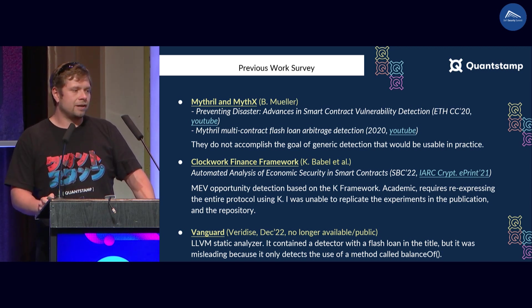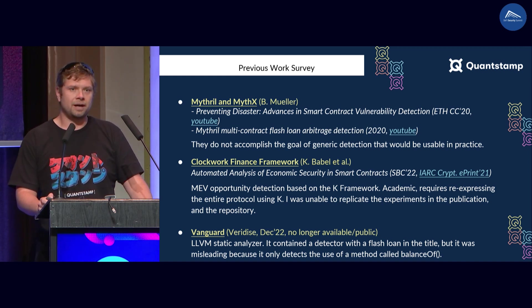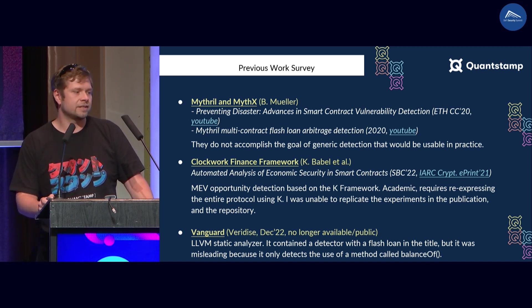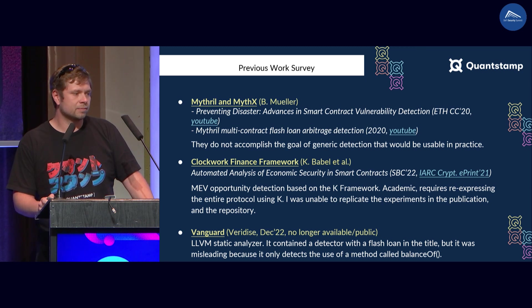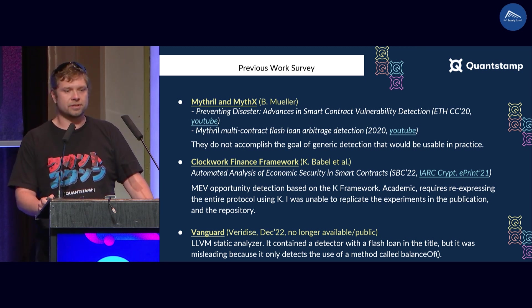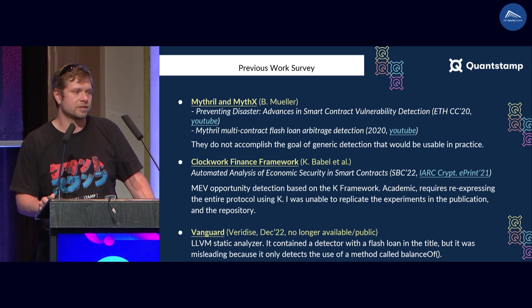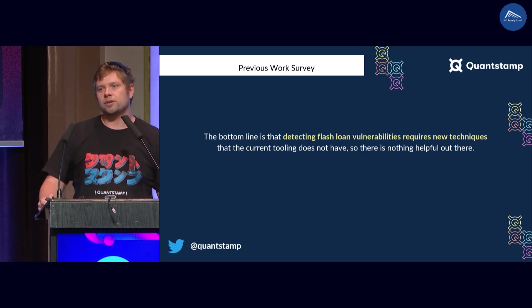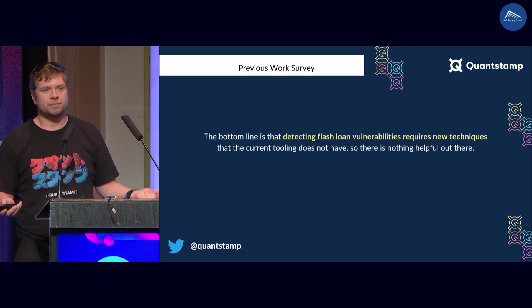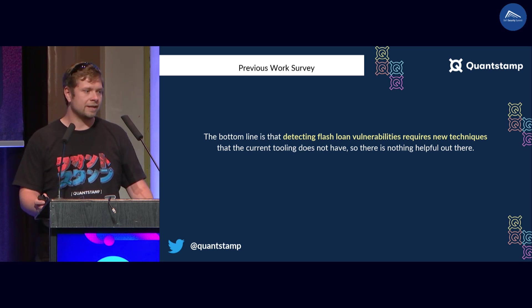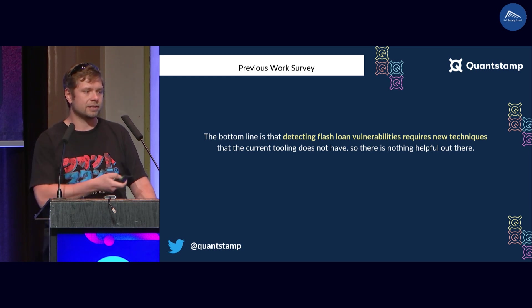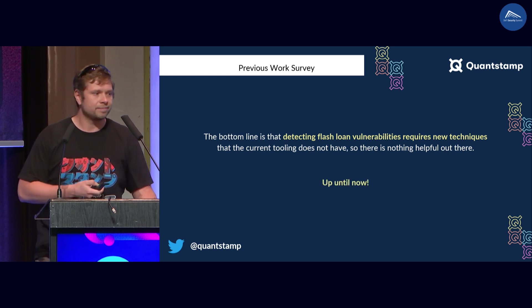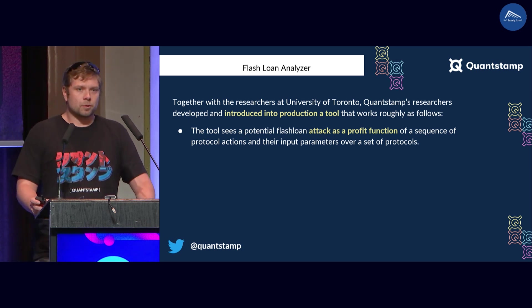Finally, there was also something called Vanguard — a tool developed by Veridise. I checked it in December 2022. It is no longer available; it was taken down from GitHub. It was also attempting to discover flash loan vulnerabilities but was not successful. The bottom line is: if you want automation and help from tooling, you need new ideas. There was nothing out there up until this point that would work.